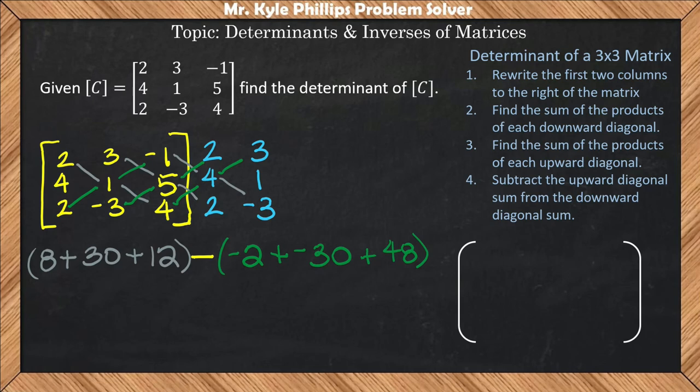So 8 plus 30 plus 12 is going to give us 50, minus negative 2 plus negative 30 is negative 32, and then negative 32 plus 48 is going to give us 16. So 50 minus 16 is going to give us 34, and that's going to be the determinant of matrix C. So here, the determinant of matrix C equals 34.